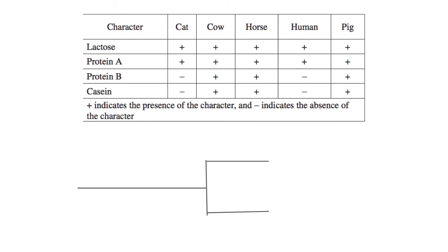So we're going to make a phylogenetic tree with two branches. On one branch we'll have the cow, the horse, and the pig, and on the other branch we'll have the cat and the human. This might not be the actual evolutionary relationship between these species, but this is an AP question, so just go with the information the question gives you and use that.